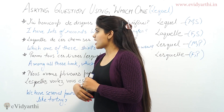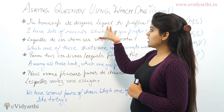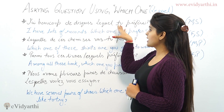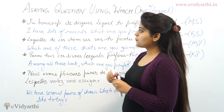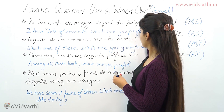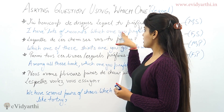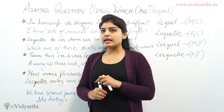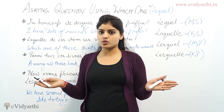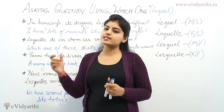An example using lequel: 'J'ai beaucoup de disques, lequel tu préfères?' which means 'I have lots of records, which one do you prefer?' In Hindi: 'Mere paas bahut saare records hain, aapko konsa pasand hai?' — 'konsa' is like 'which one', or in French, lequel.